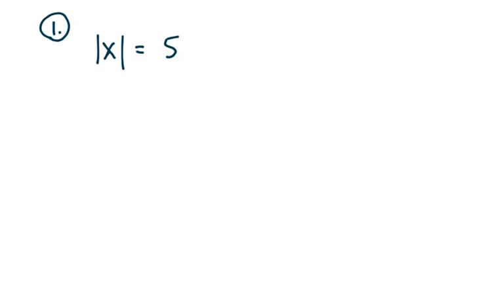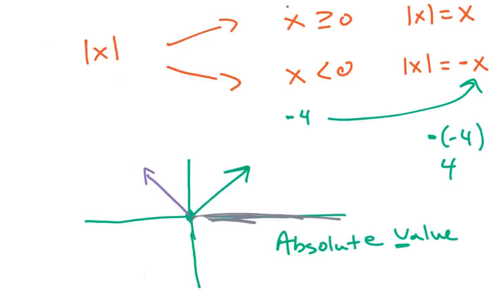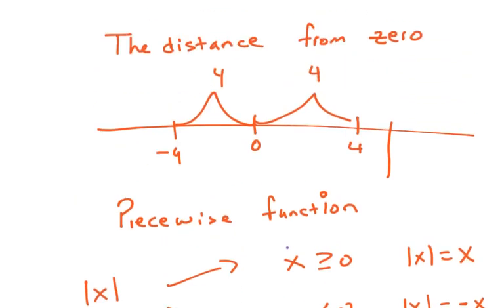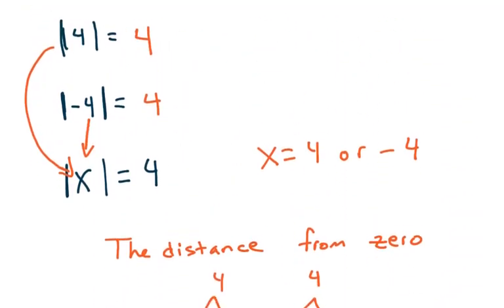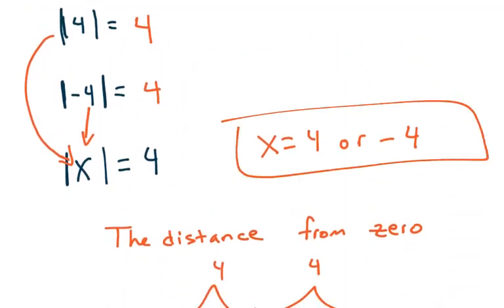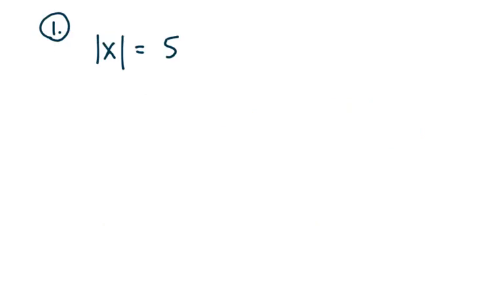So what you're going to be asked to do is solve questions like this. This should be straightforward — exactly like the one I did. If the absolute value of x equals 5, then all you have to say is that x could be 5 or negative 5. Plug it in and see that it's true. Easy enough.